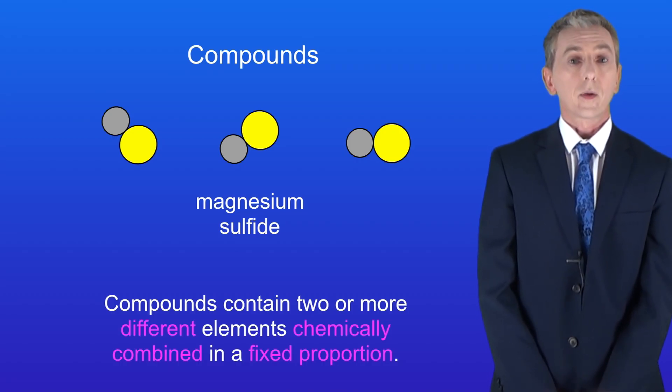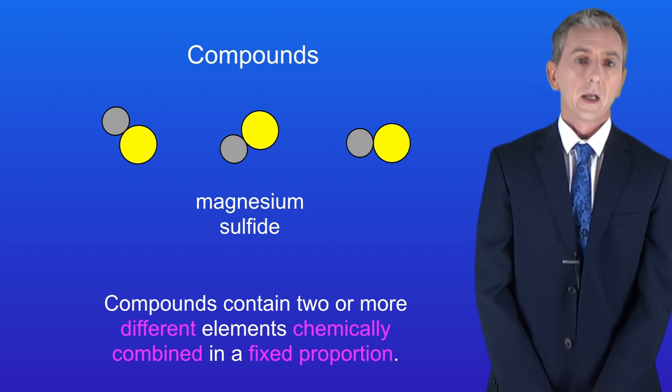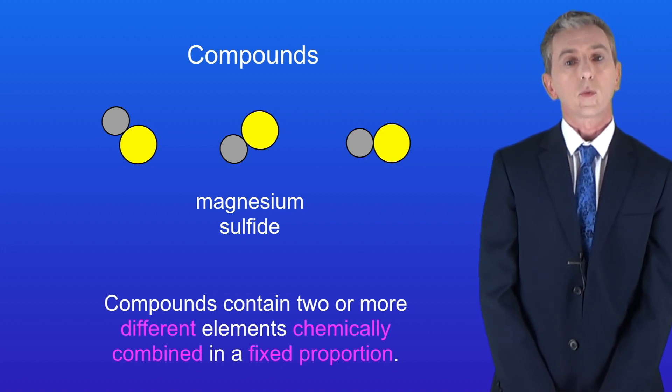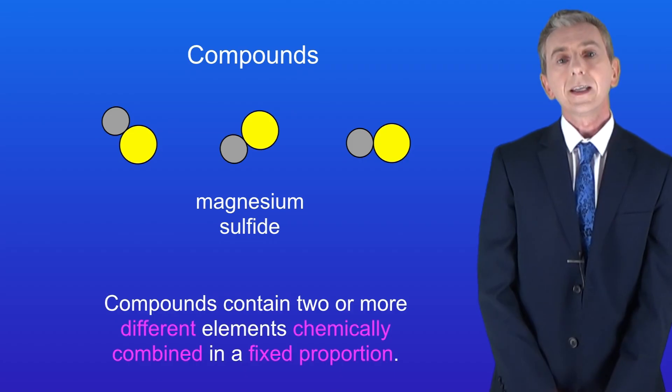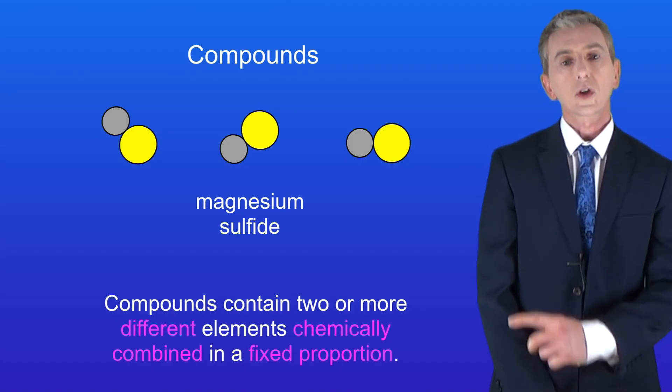In compounds the elements combine in a fixed proportion. So for example in magnesium sulfide we always have one atom of magnesium chemically combined with one atom of sulfur. You need to learn the definition of a compound which I'm showing you here.